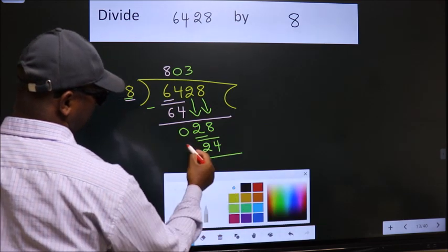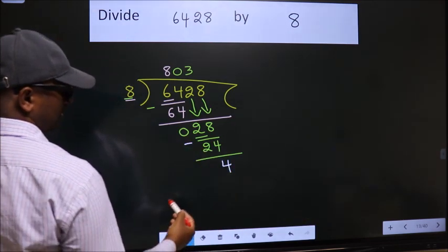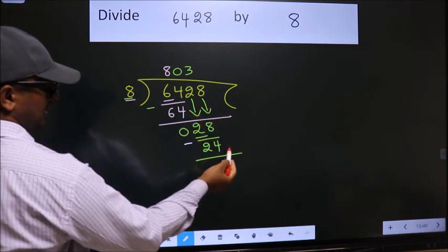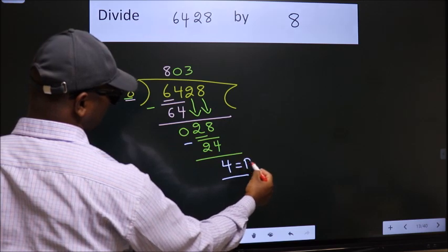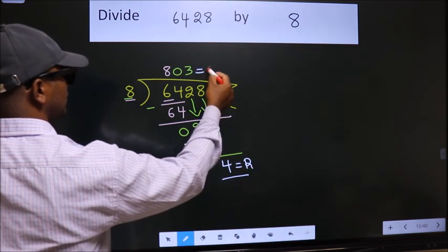Now we subtract. We get 4. No more numbers to bring down, so we stop here. This is our remainder, this is our quotient.